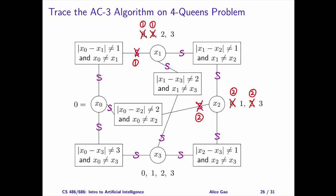Step 3. Let's remove the arc between x0 and x3, where x3 is the primary variable. Is this arc consistent? If x3 is 0, x0 equals 0 violates a row constraint. If x3 is 1, x0 equals 0 satisfies both constraints. If x3 is 3, x0 equals 0 violates a diagonal constraint. Therefore, this arc is not consistent, and we need to remove 0 and 3 from the domain of x3.